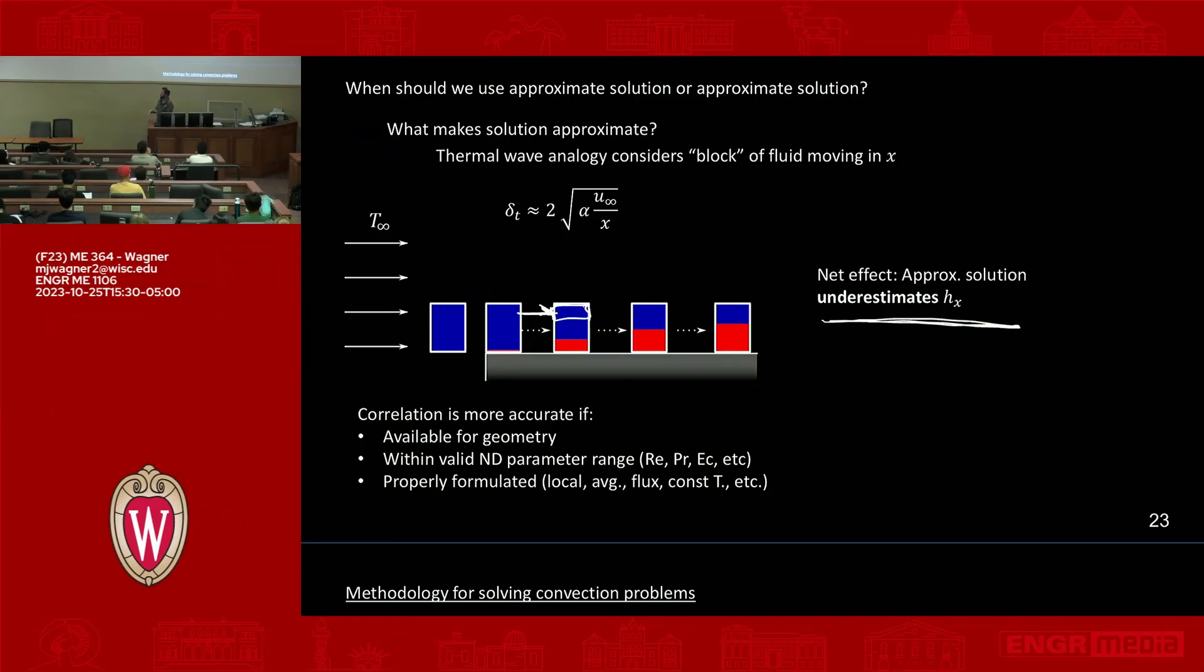It's also more accurate if it's properly formulated. What I mean is, let's say somebody went to the trouble of developing a correlation, but it's for a local heat transfer coefficient. If you want the average, the local's not accurate for the average, so you have to adjust it for that. Or vice versa, they developed an average, you want the local, it's only accurate under certain conditions. Constant flux, constant temperature, et cetera. These are things that you have to think about.